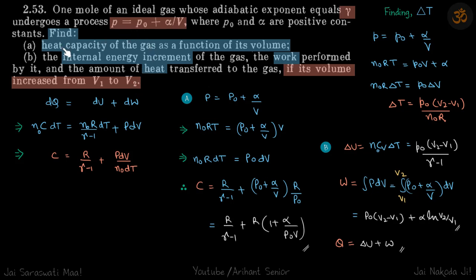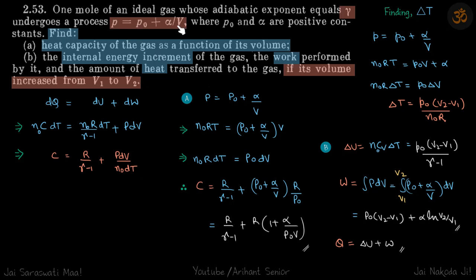First, let's find the heat capacity, as we did in the previous problem. We write dQ = dU + dW, so n₀·C·dT = n₀·Cv·dT + p·dV. Taking n₀ and dT to one side gives the formula from which we get heat capacity. We need the term dV/dT, so we write the equation in terms of volume and temperature so we can differentiate.